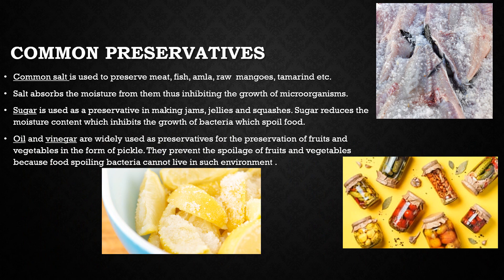Common preservatives include common salt, sugar, oil, vinegar, etc. Common salt has been used to preserve meat and fish for ages — meat and fish are covered with dry salt to prevent the growth of bacteria so they do not get spoiled and remain good for a long time. Salt is also used to preserve fruits such as raw mangoes, lemon, amla, etc. in the form of pickles, and tamarind in the form of chutney. It does not allow bacteria or fungus to grow on fruits and vegetables preserved in it. For example, raw mangoes preserved using common salt in the form of pickles do not get spoiled for a long time.